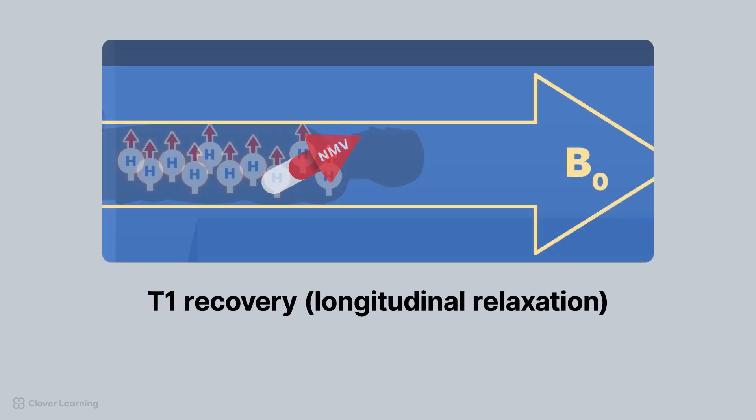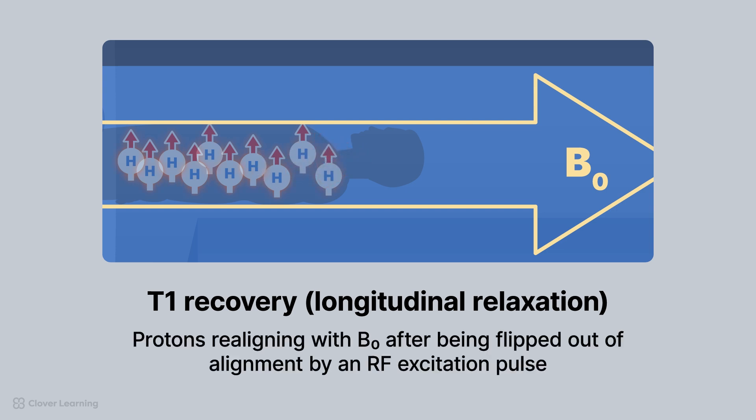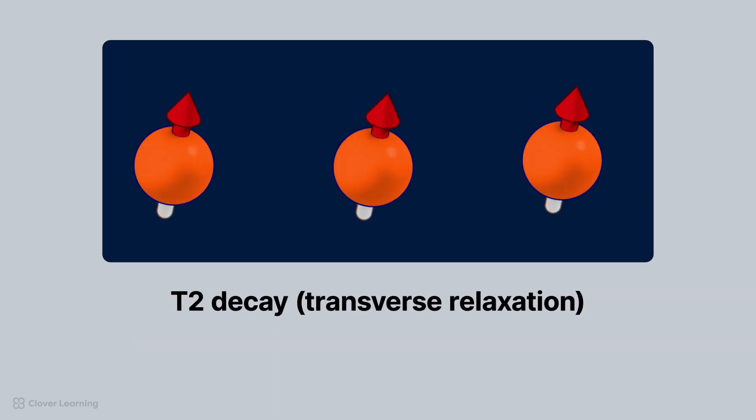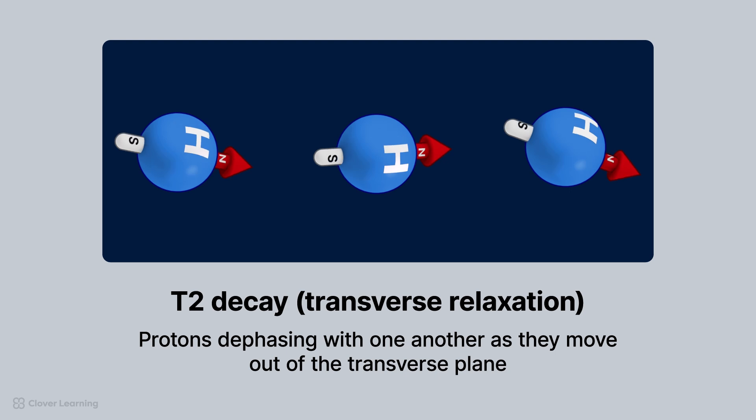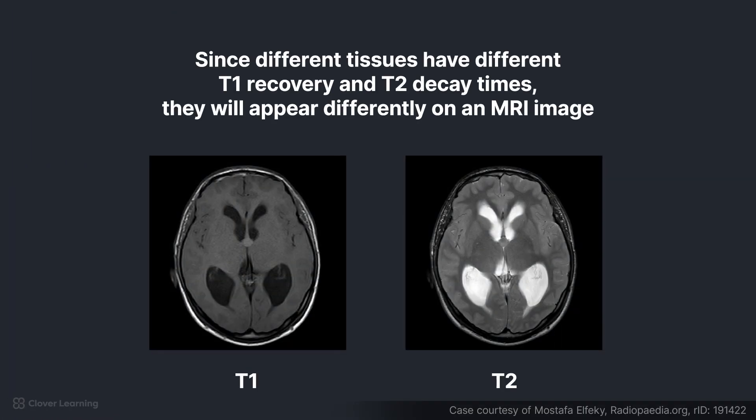Remember, T1 recovery or longitudinal relaxation is the process of protons realigning with B sub-zero after being flipped out of alignment by a radiofrequency excitation pulse. T2 decay or transverse relaxation is the process of protons dephasing with one another as they move out of the transverse plane. Since different tissues have different T1 recovery and T2 decay times, they will appear differently on an MRI image.